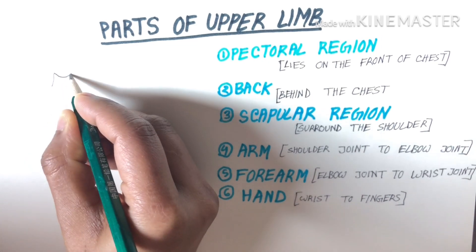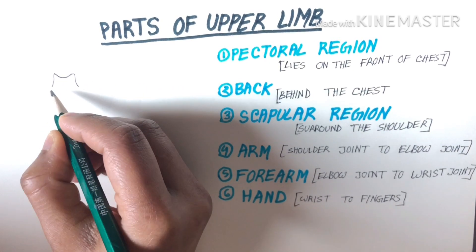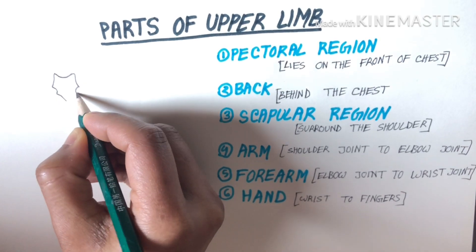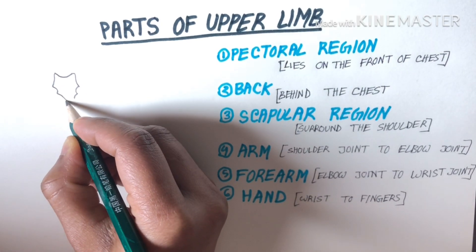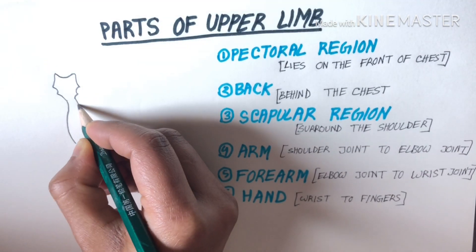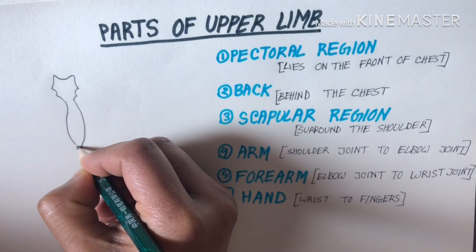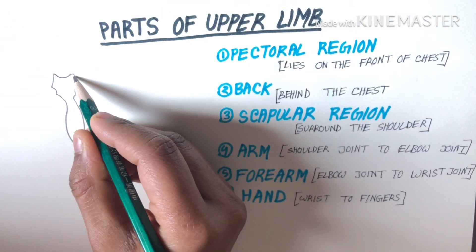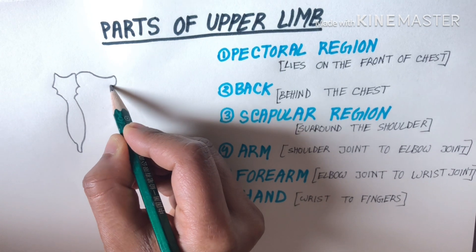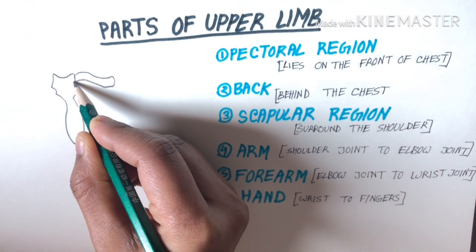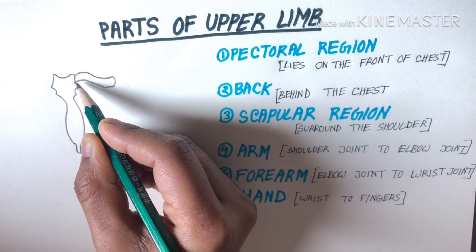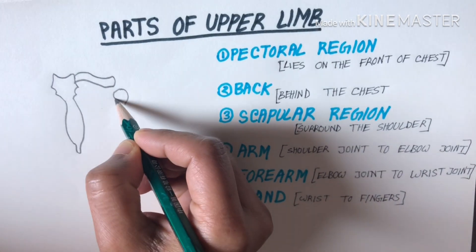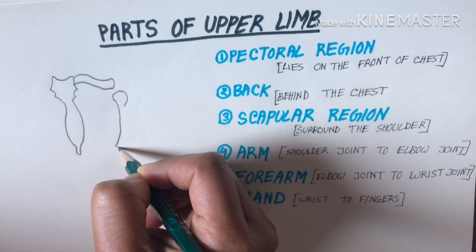Now I will make the sternum — this is the manubrium, then the body of sternum. In this video I only talk about parts of the upper limb. In my next video I will talk about muscles of the upper limb, so for that we need to understand every part of the upper limb properly, because every part has different muscles and different functions.